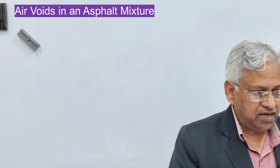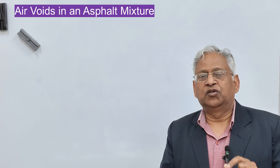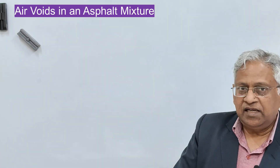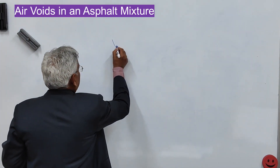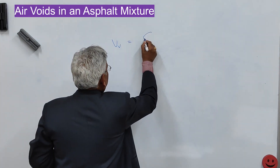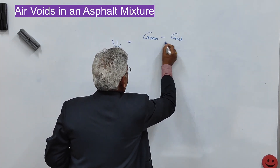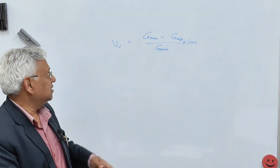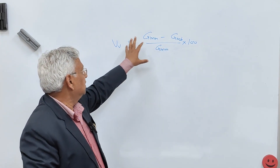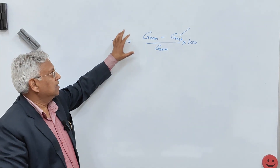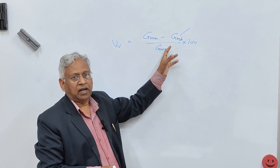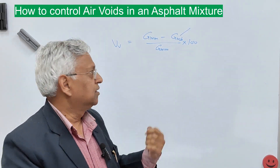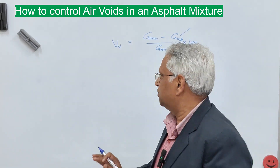For these reasons, it is important to control air voids in a hot mix asphalt. Today's session provides tips on how to control air voids when you design a bituminous mix. Air voids (Va or VV) are given by the equation: (Gmm − Gmb) / Gmm × 100, where Gmm is the theoretical maximum specific gravity and Gmb is the bulk specific gravity of the compacted mix. You can control air voids by increasing or decreasing these parameters — reducing the gap reduces air voids, and increasing it raises air voids.